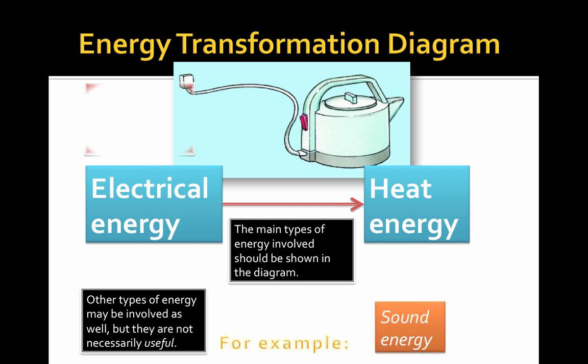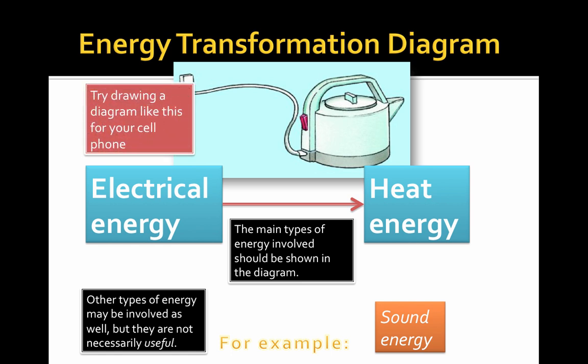It doesn't have to be just one form converted into another — it could be one form converted into several forms, depending on usefulness. Think of your cell phone: when you charge it, you're getting energy from the electrical socket. When you unplug it, energy is stored. What's the purpose of all that energy? What types of energy are being produced — for the screen or the speakers?